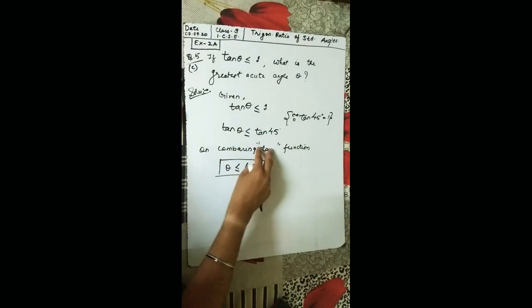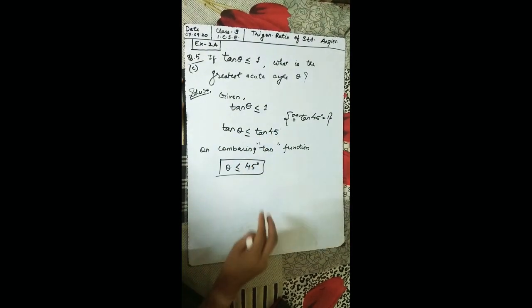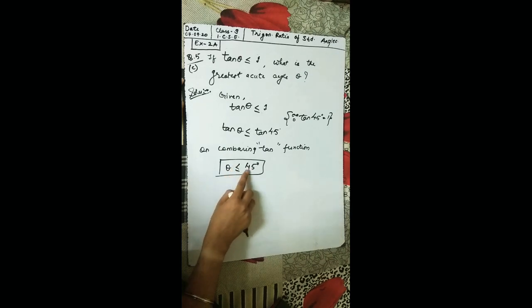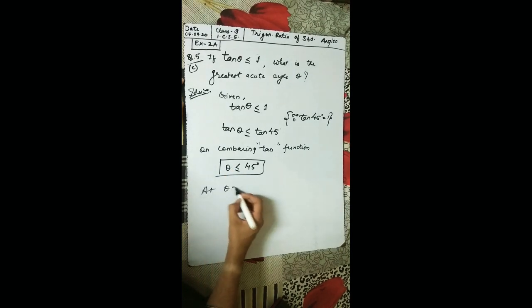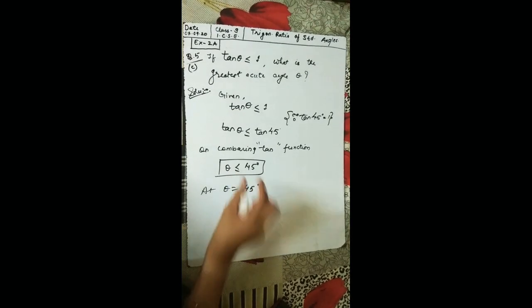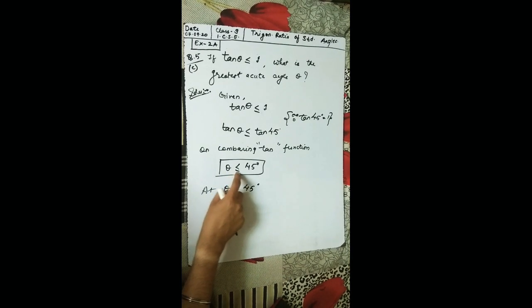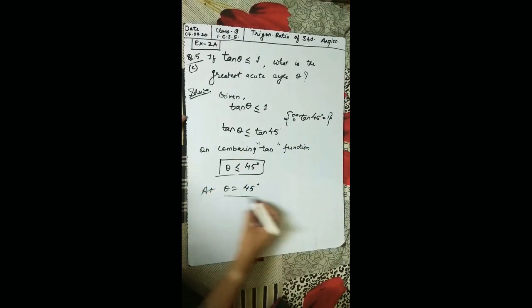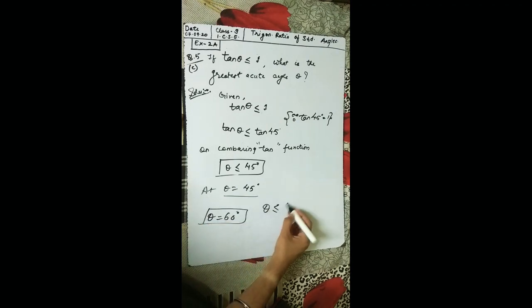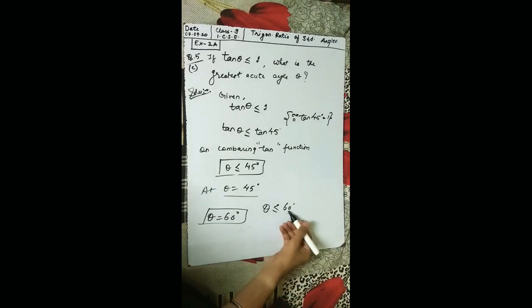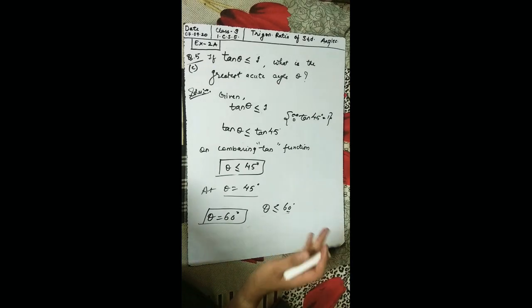Writing tan 45° in place of 1 and comparing the tan function, θ ≤ 45°. Since this is an inequality with an equal sign, we can write θ = 45° as the greatest acute angle. Similarly, in the first question θ = 60° because θ ≤ 60°, making 60° the least.